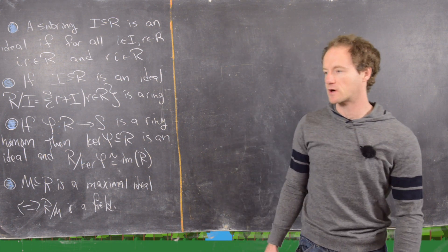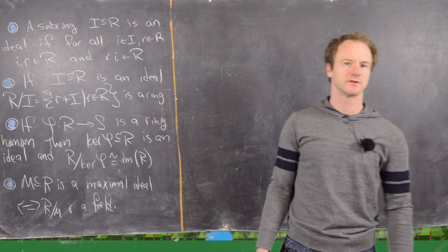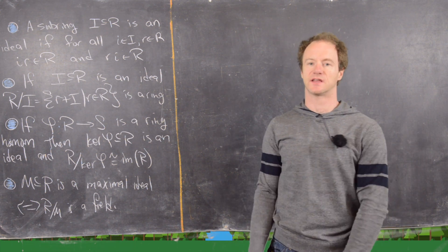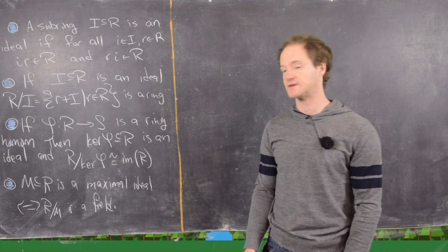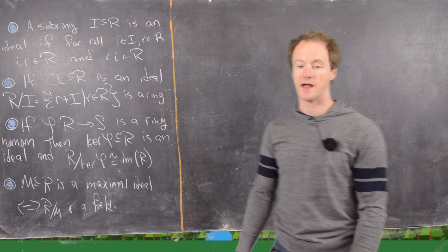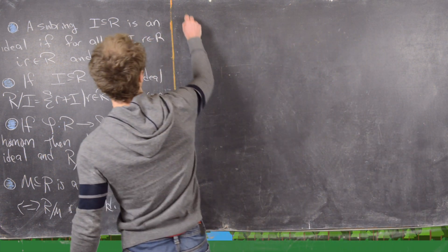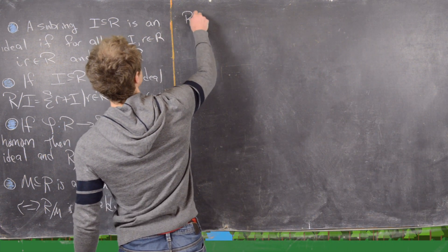In this video we're going to look at some examples of quotient rings, ideals, ring homomorphisms, and related topics. The first thing we want to look at is this example.